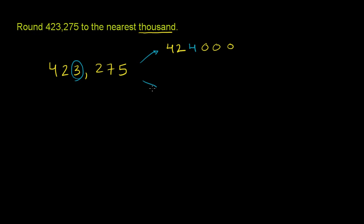And if we wanted to round down, we would go to 423,000. We would get rid of the 275. So this is our choice: round up to 424,000 or round down to 423,000. And to figure it out,